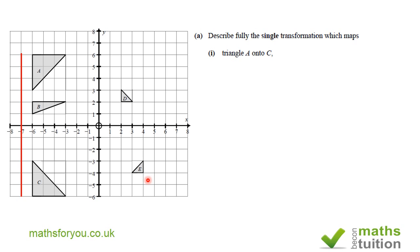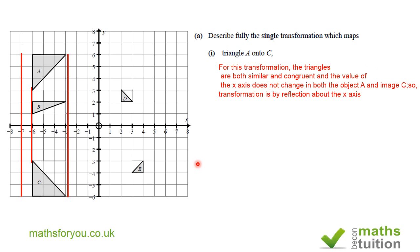This would be the line joining from the vertices containing the 90 degrees, and similarly for the next set of vertices, and for the third set of vertices. One thing you notice here is that for all these lines, the x-axis is the perpendicular bisector. It seems to me that what you've got here is a transformation by reflection about the x-axis.